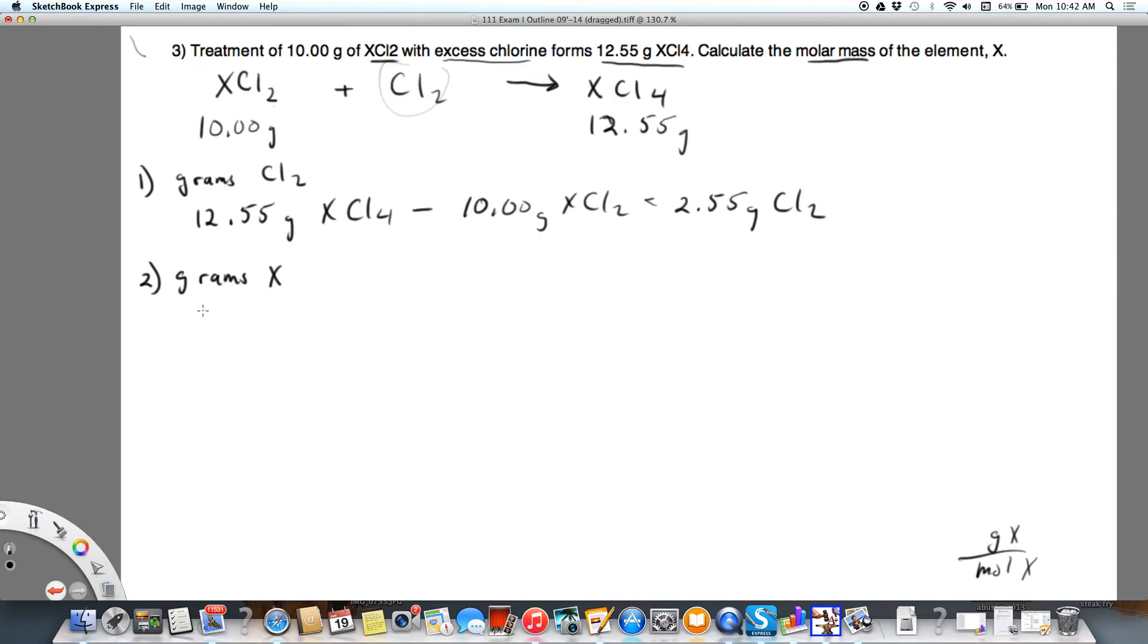So I'm going to take 10.00 grams of XCl2, and I'm going to subtract 2.55 grams of Cl2. That's going to give me 7.45 grams of X.